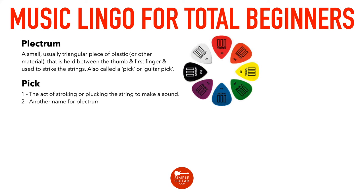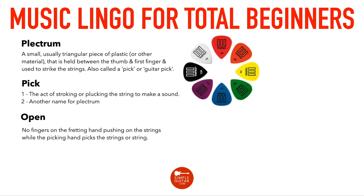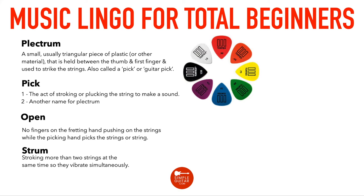When you're playing something 'open,' no fingers on the fretting hand are pushing on the strings while the picking hand picks the string or strings. A 'strum' is stroking more than two strings at the same time so they vibrate simultaneously. When you think of strumming, you need to be able to strum two strings, three strings, four, five, or six strings.